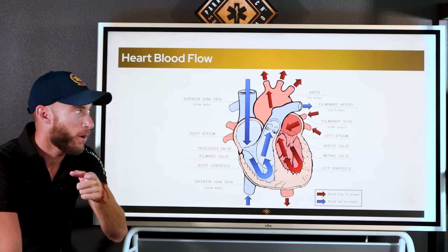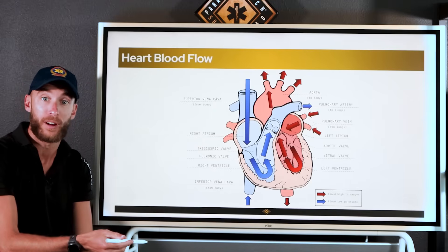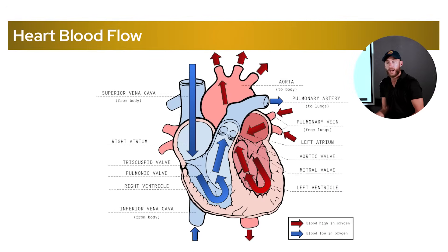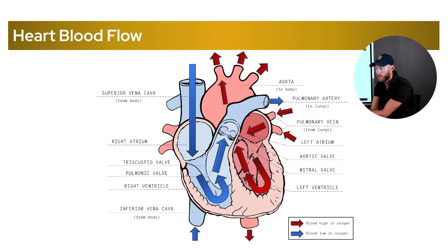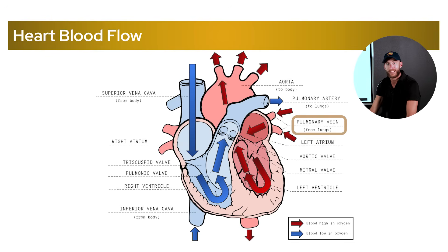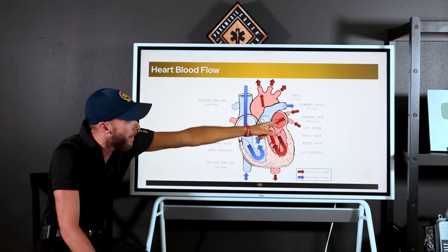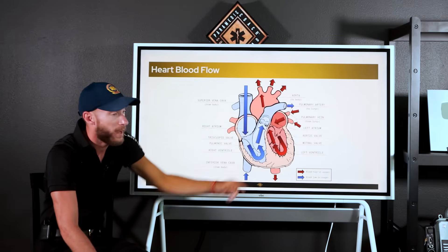The pulmonary artery goes away from the heart — notice that. It goes to the lungs, and that is where we pick up on what we just learned: that whole alveoli system. The pulmonary artery goes down into the lungs to gather oxygen. Oxygen moves off the alveoli and we gather it. We push that oxygen back to the heart via the pulmonary vein from the lungs. Now we have oxygen-rich blood coming back from the lungs in the pulmonary vein.